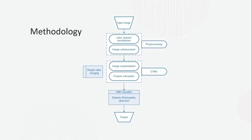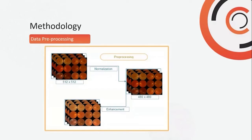Here is the main flowchart of the work. I will talk briefly about some main steps: preprocessing, U-Net, training, and classification. In the preprocessing step, images from the dataset undergo normalization from 512×512 to 480×480, followed by image enhancement as shown in the figure.